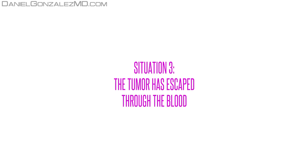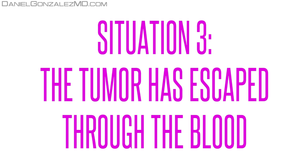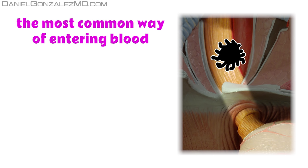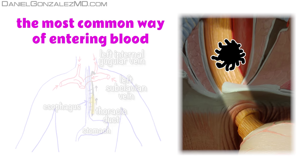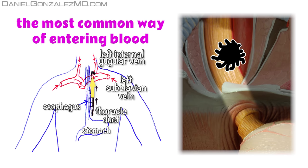Situation 3: The tumor has escaped through the blood. The esophageal cancer cells can enter the blood in two ways. The most common way is when cancer cells have reached the blood indirectly from the lymph vessels that go towards the thoracic duct.